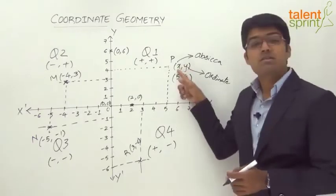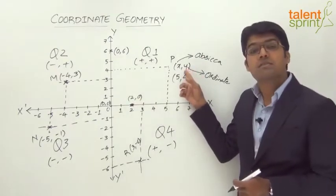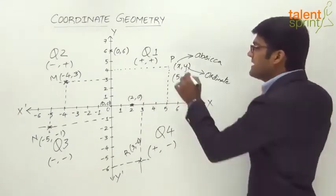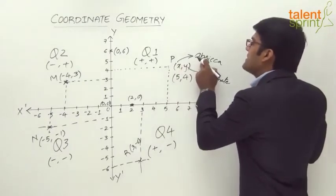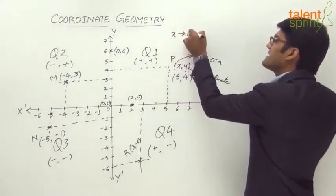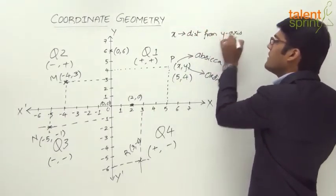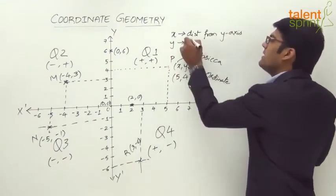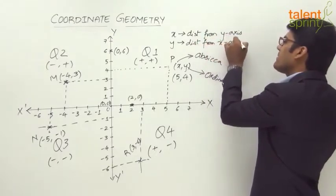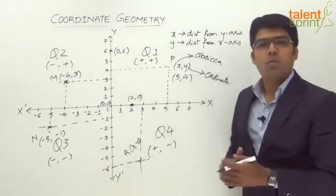Where x denotes the distance of the point from the y-axis, which is the horizontal distance, and y denotes the distance of the point from the x-axis, which is the vertical distance. The important point to note: in the ordered pair, the abscissa x denotes the distance from the y-axis (the vertical axis), whereas the ordinate y denotes the distance from the x-axis.